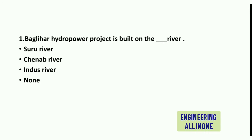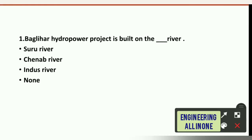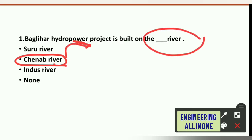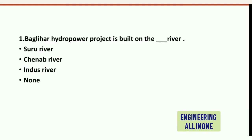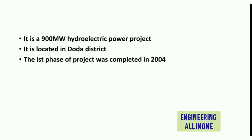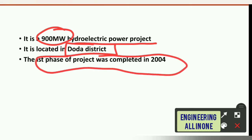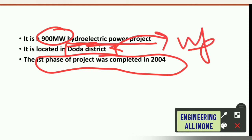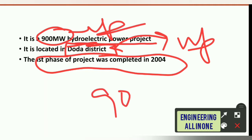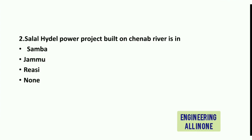Question 1: Baglihar hydropower project is built on which river? Options are: Suru River, Chinab River, Indus River, or none. The right option is option B: Chinab River. Baglihar hydropower project is built on the river Chinab. It is a 900 megawatt hydroelectric power project, located in the Doda district, and the first phase was completed in 2004.